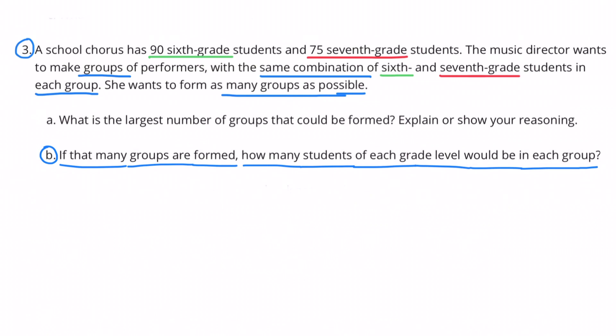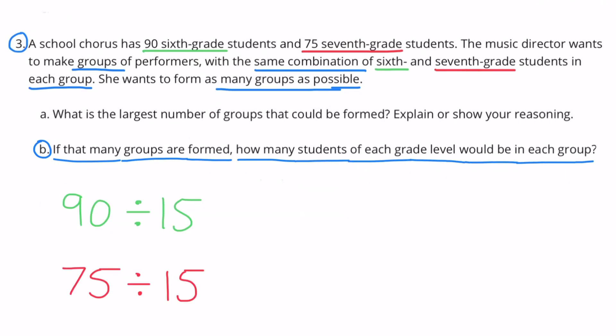3b. If that many groups are formed, how many students of each grade level would be in each group? 90 sixth-grade students divided by 15 and 75 seventh-grade students divided by 15.